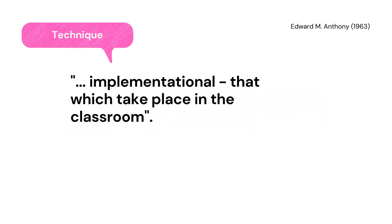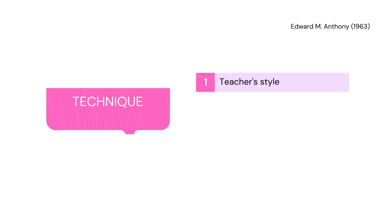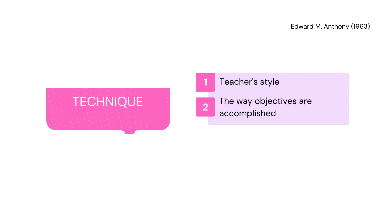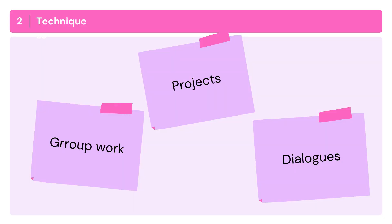According to Anthony, a technique is implementational — that which takes place in the classroom. It is personal; it is the personal style of the teacher. It deals with the way immediate objectives can be accomplished. And of course, a technique is consistent with a method, and the method is in harmony with an approach. Examples of techniques include group work, projects, dialogues, discussions, etc.